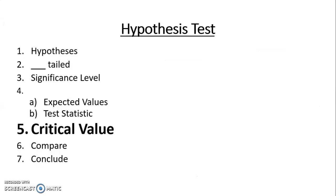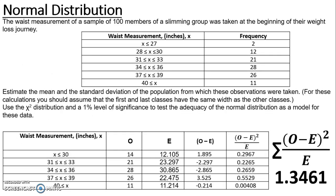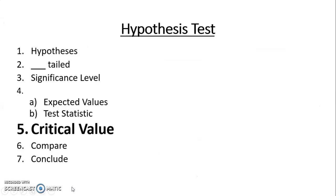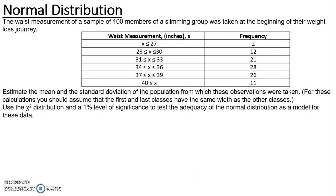Next I need to find my critical value. This is my original table with six categories, but once I have combined categories I actually only have five possible categories for X. So when working out my degrees of freedom, my number of categories is five. I always subtract one for degrees of freedom, then subtract a second one because I had to estimate the mean, and a third one because I had to estimate the standard deviation.